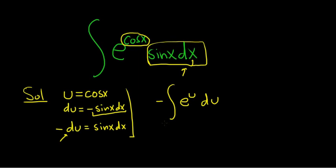The integral of e to the u is simply e to the u, so we get negative e to the u plus our arbitrary constant of integration.